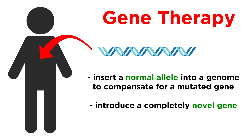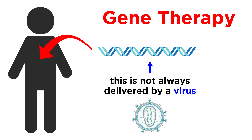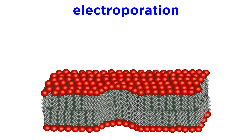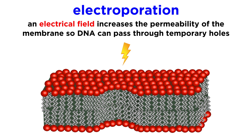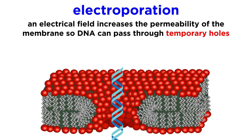It can also involve introducing a completely novel gene into an organism. It can even involve inactivating, or knocking out, a mutated gene so that it will not be expressed. In addition, the novel DNA is not always delivered by a virus. There are techniques that involve the introduction of foreign genes into cells by electroporation, where an electrical field is used to increase the permeability of the cell membrane, so that the DNA can pass through tiny temporary holes.